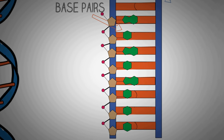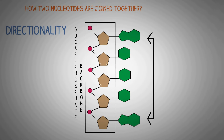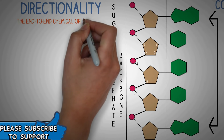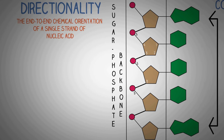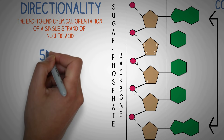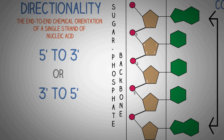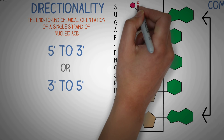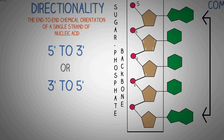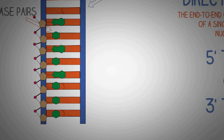On the opposite side we have the other strand of the DNA, which is similar to the original strand but has some key important differences. To understand these differences you need to understand the concept of directionality and complementary base pairing. Directionality essentially means the end-to-end chemical orientation of a single strand of nucleic acid, expressed as either five-prime to three-prime or three-prime to five-prime.